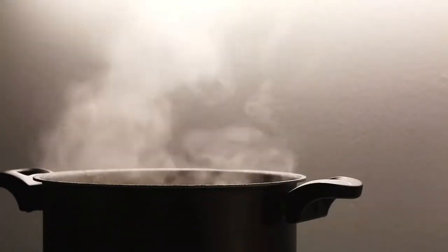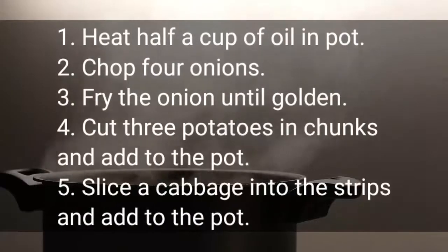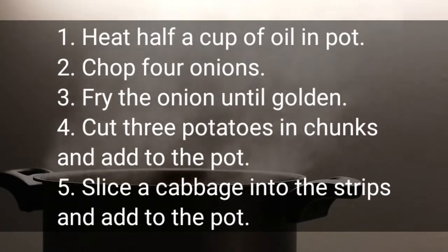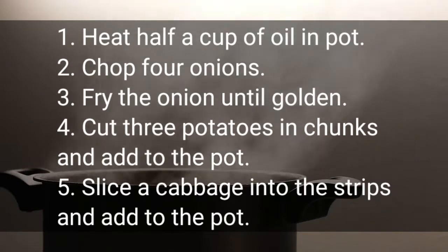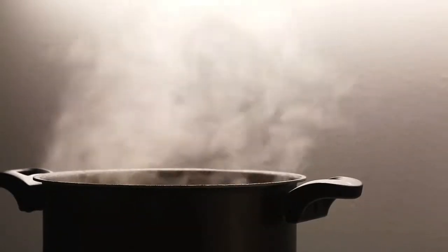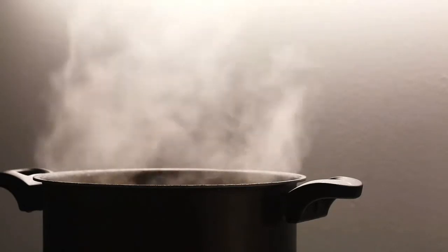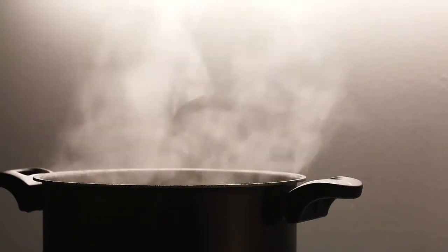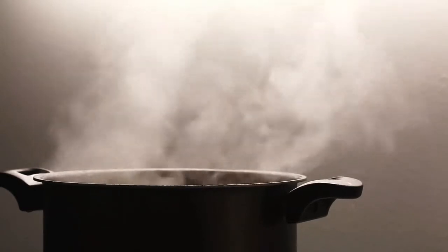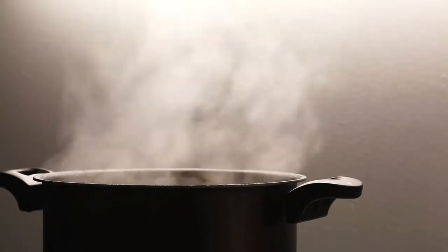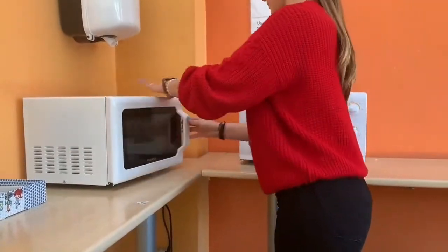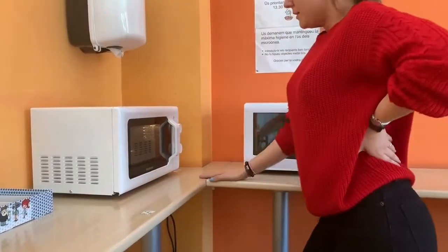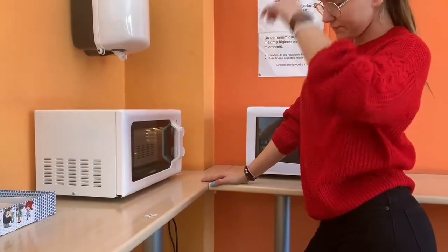An algorithm for preparing vegetable soup may tell us: heat half a cup of oil in a pot; finely chop four onions; fry the onion until golden; cut three potatoes into chunks and add to the pot; slice a cabbage into strips and add to the pot — and so forth. You can follow the same algorithm dozens of times, each time using slightly different vegetables and getting a slightly different soup, but the algorithm remains the same. You can even build a machine that embodies this algorithm and follows it automatically — you just need to provide it with water, electricity, and vegetables, and it will prepare the soup by itself.